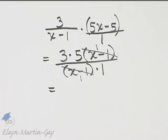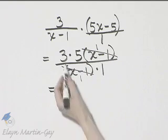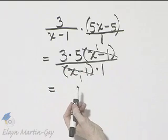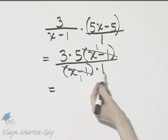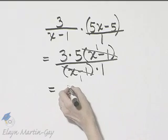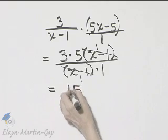And now let's write down our simplified product. In the numerator, 3 times 5 times 1, that's 15. In the denominator, 1 times 1, so it's 15 over 1, or simply 15.